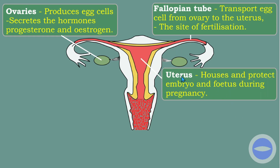The function of the uterus is that it houses and protects the embryo and fetus during pregnancy. When a female is pregnant, their baby stays inside the uterus, so the uterus is essentially a house for the baby.